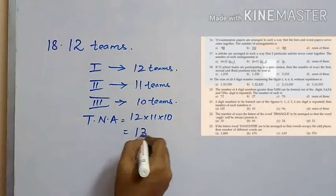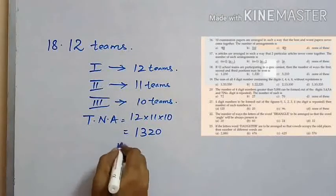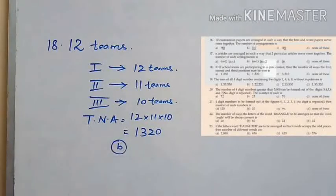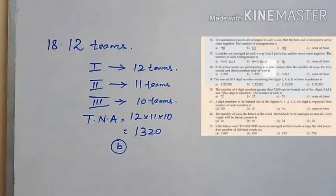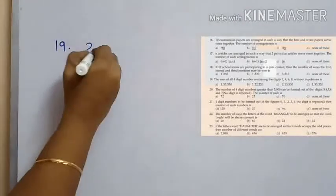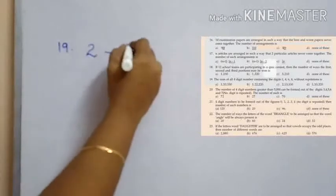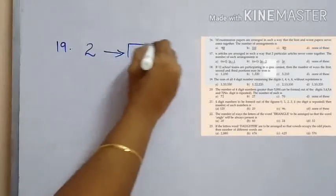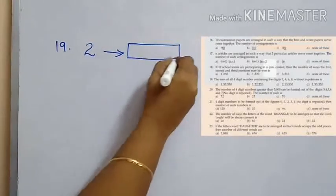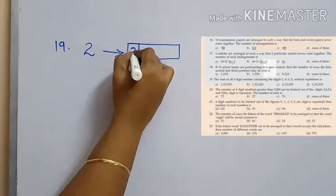The total number of arrangements equals 1320, which is option B. The next question is: find the sum of all four-digit numbers containing the digits 2, 4, 6, 8 without repetition.